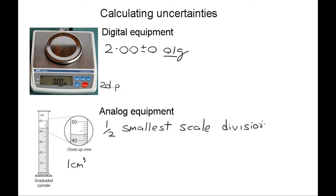So if you were to measure, for example, 25 centimeters cubed, you'd write 25.0 plus or minus 0.5, which is half of one centimeters cubed. Both of these measurements are called the absolute uncertainty.